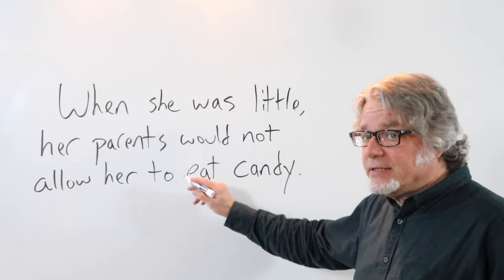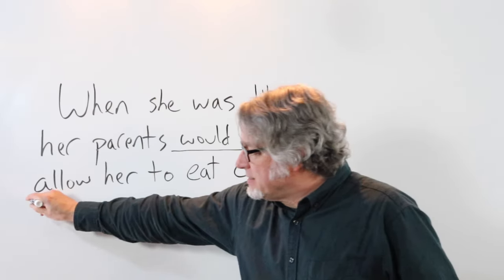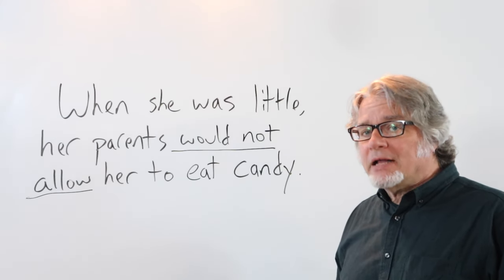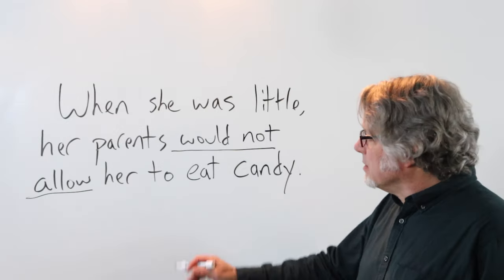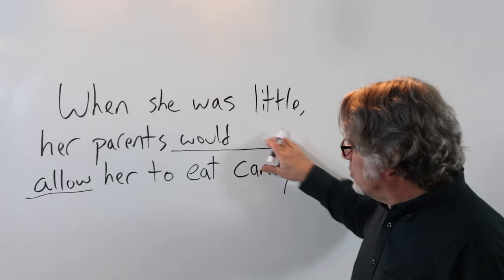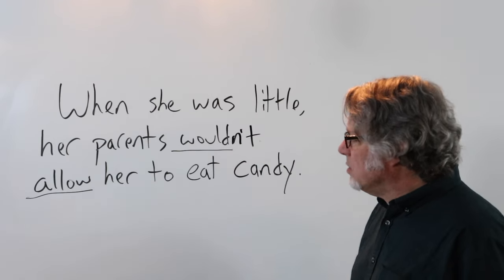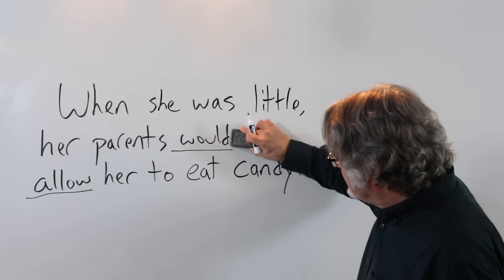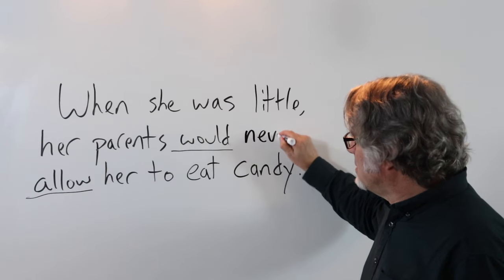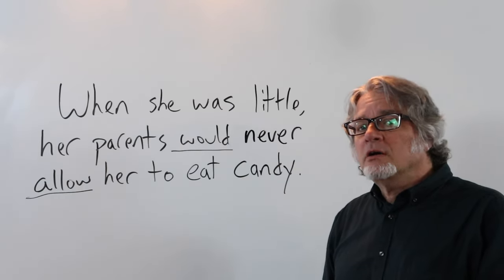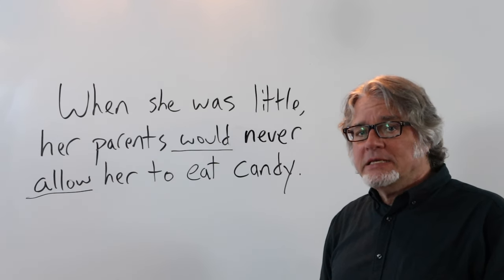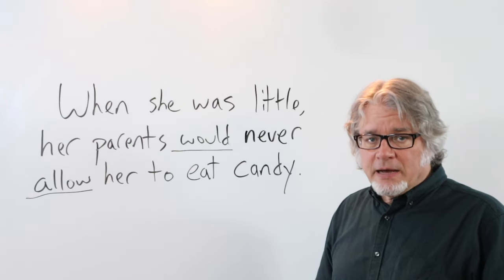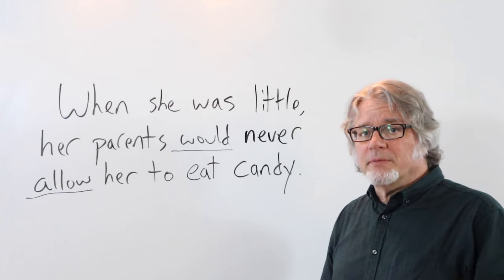WOULD can also be used in the negative for past activities. For example: 'When she was little, her parents would not allow her to eat candy.' Or: 'When she was little, her parents would never allow her to eat candy.' This is a good example of something that did not happen all the time in the past.